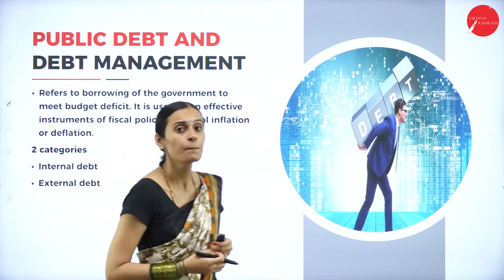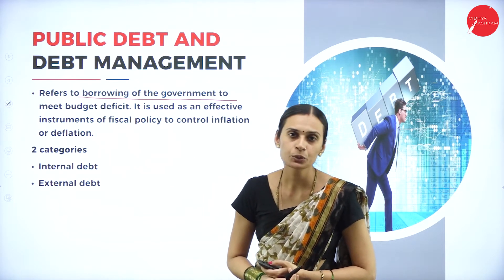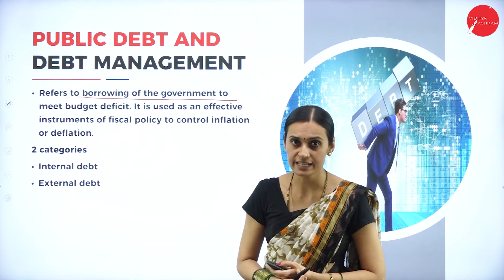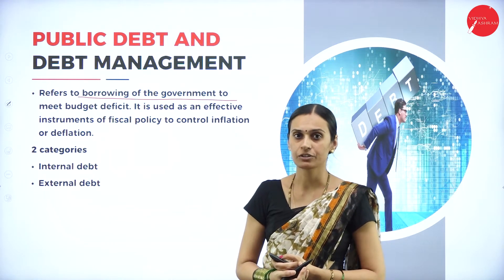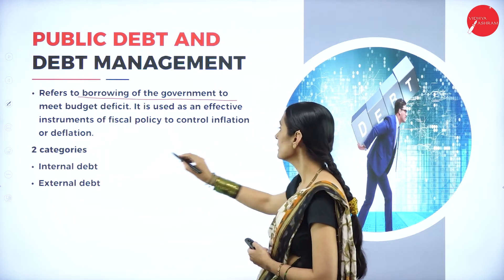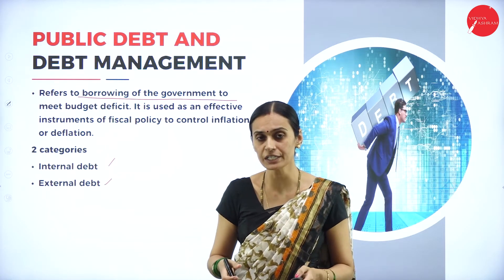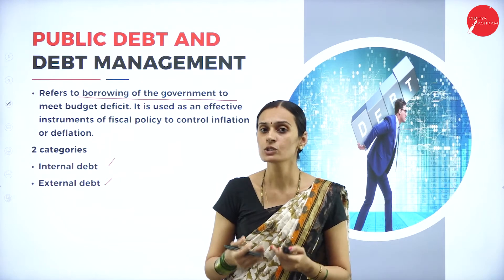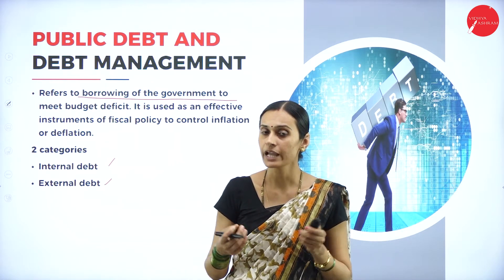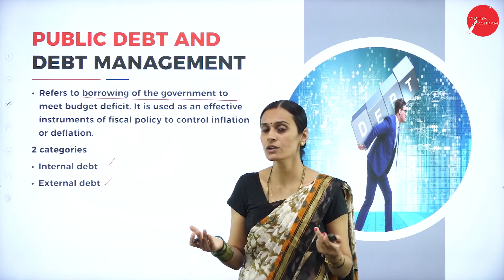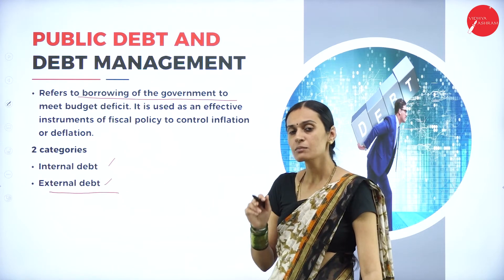Another important instrument is public debt. What do you mean by public debt? It refers to borrowing by the government to meet budget deficits. If it is not possible to meet expenditure by its own funds, the government can borrow loans from internal or external sources — this is called public debt. There are two types of public debt: internal debt and external debt. If the government borrows funds from internal people or within the country, it is called internal debt; if it borrows from foreign countries, those are considered external debt. Internal debt is not as serious because it is easily manageable, but external debt is one of the more serious matters for the government.